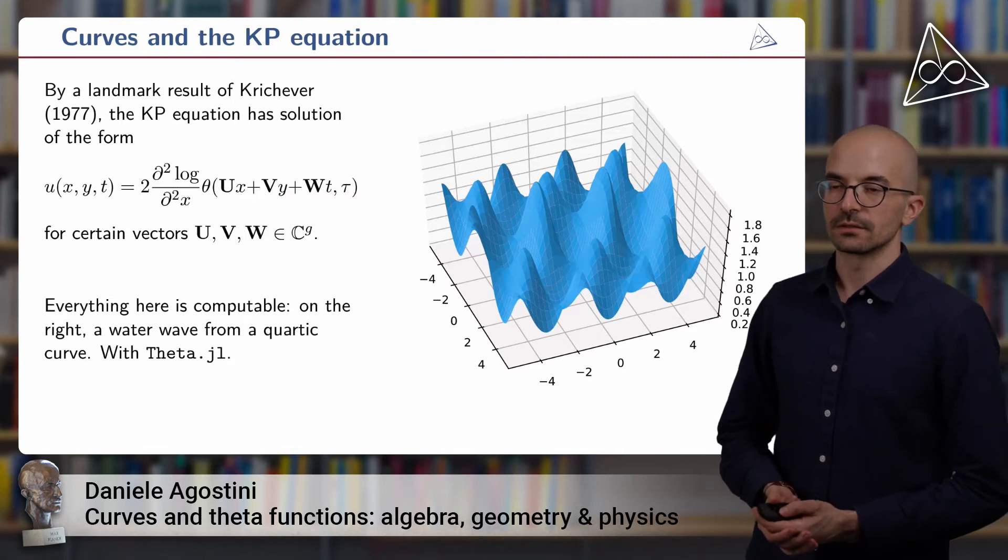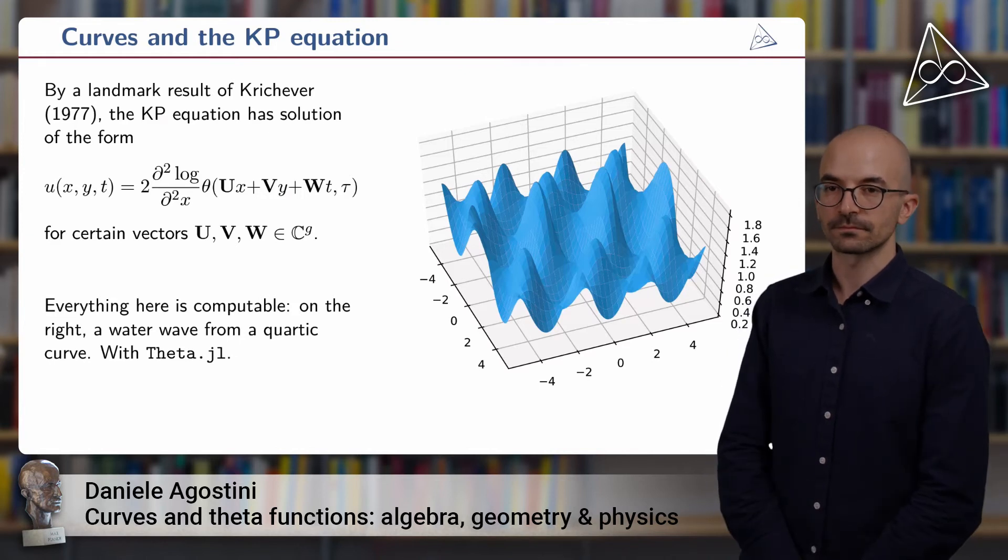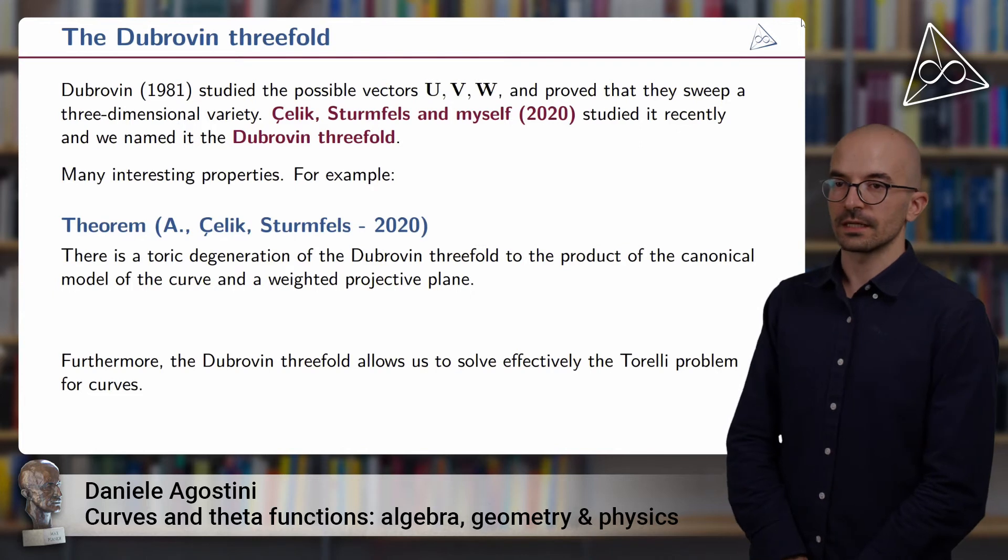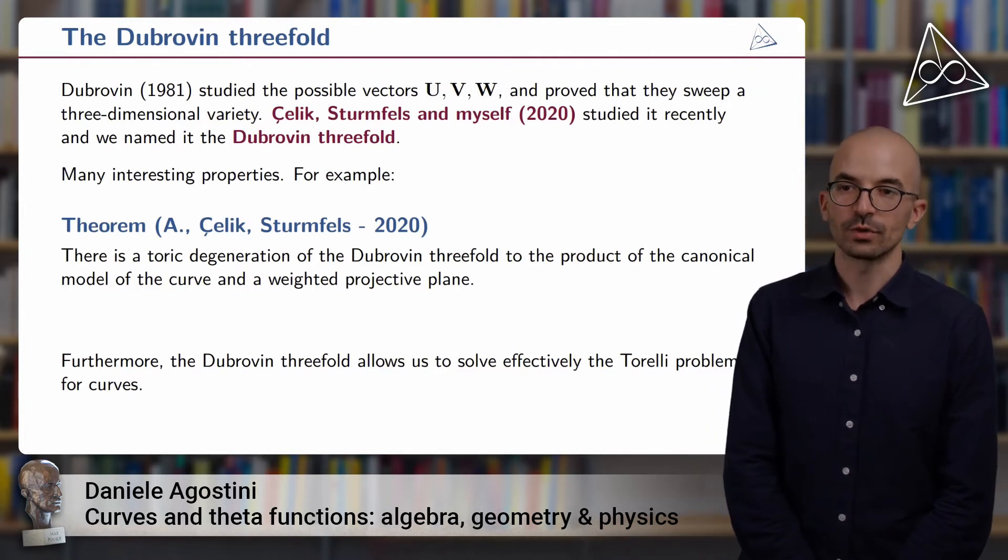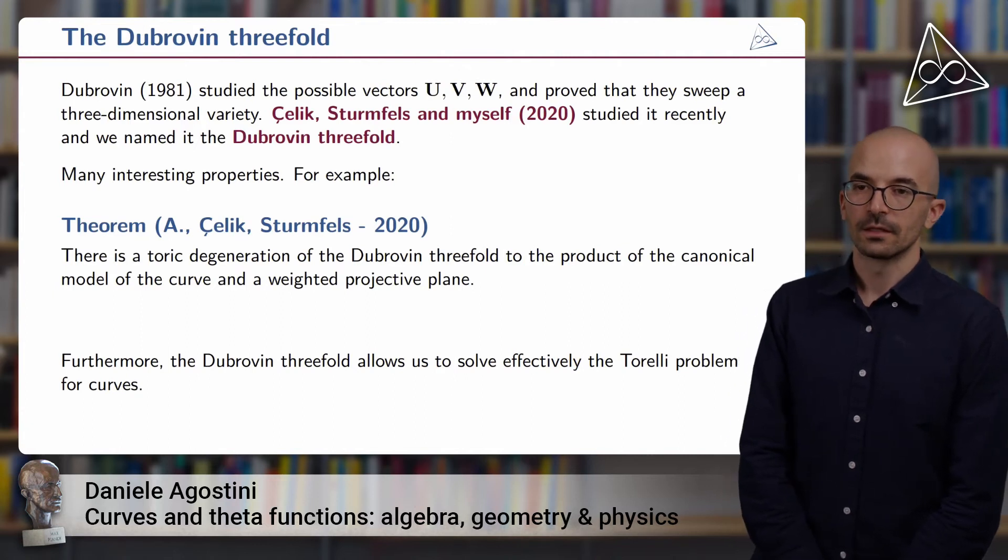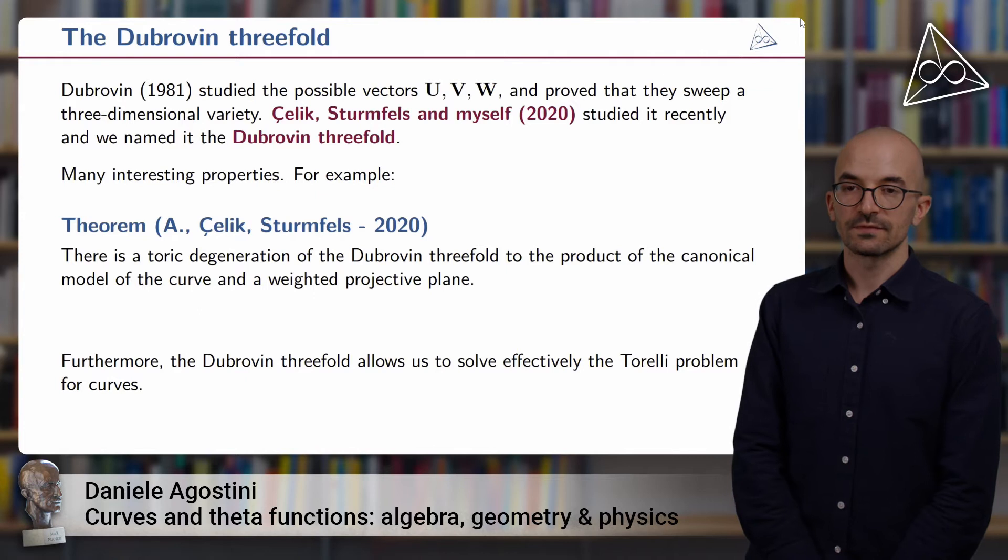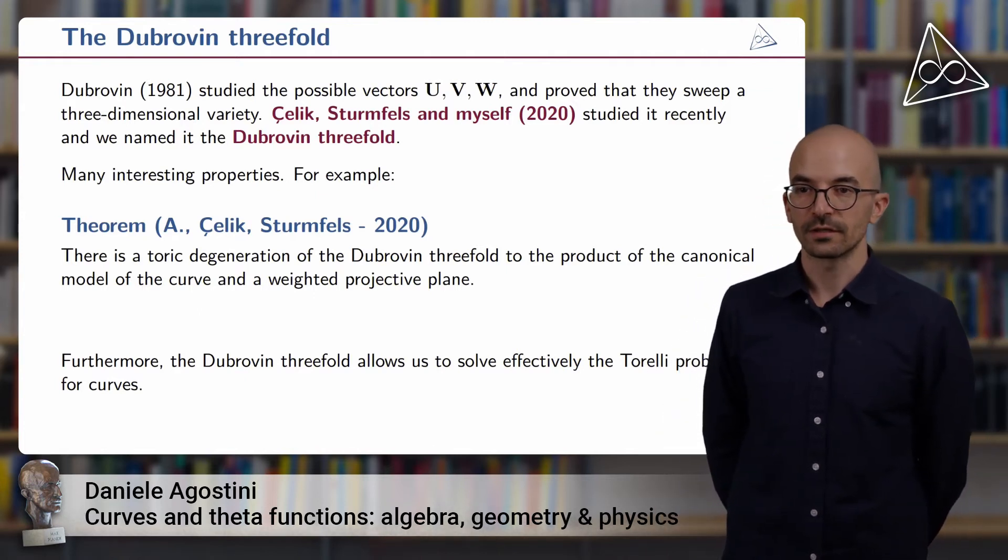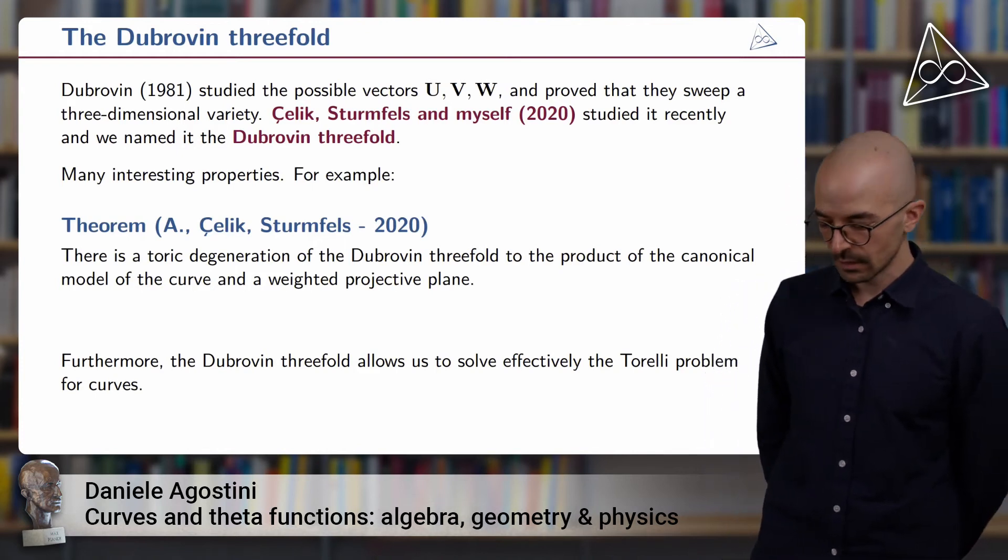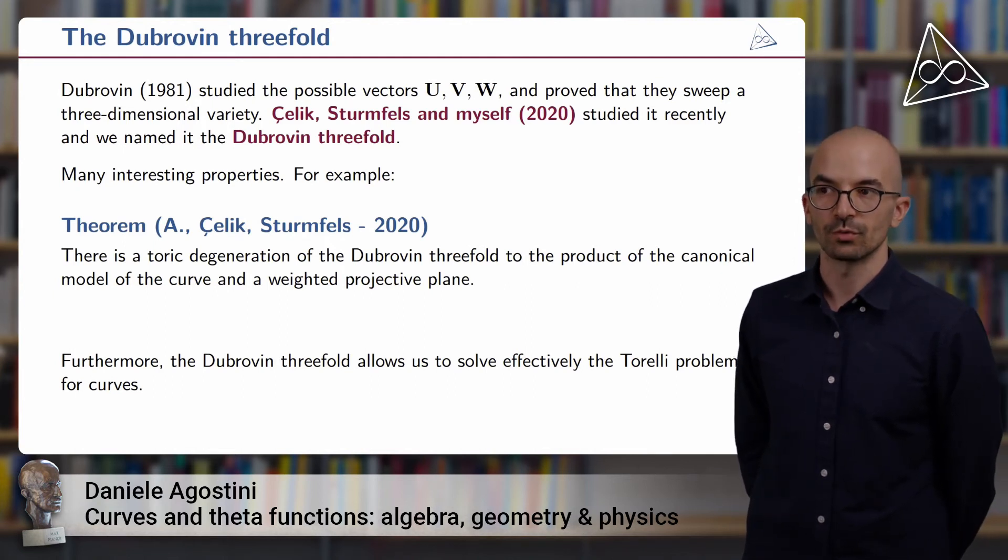First, we see here that from a specific curve, the KP solutions are classified by the vectors u, v, and w. Dubrovin studied the possible vectors u, v, and w that will solve the KP equation. And he proved that they sweep a three-dimensional variety. In a joint project with Türkü Çelik and Bernd Sturmfels of the MPI that we did last year, we studied this variety from the point of view of algebraic geometry. And we named it the Dubrovin threefold to honor the memory of Professor Dubrovin. In our paper, we offer different examples of computation of such a threefold.